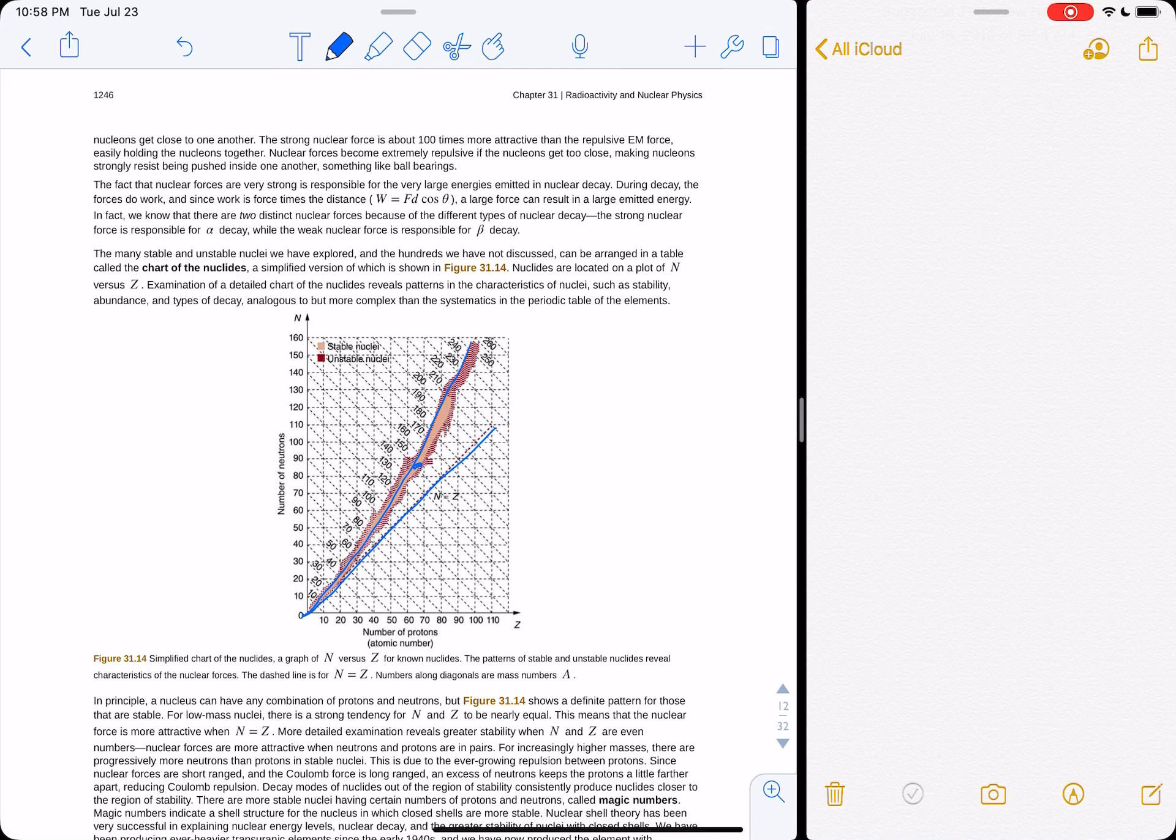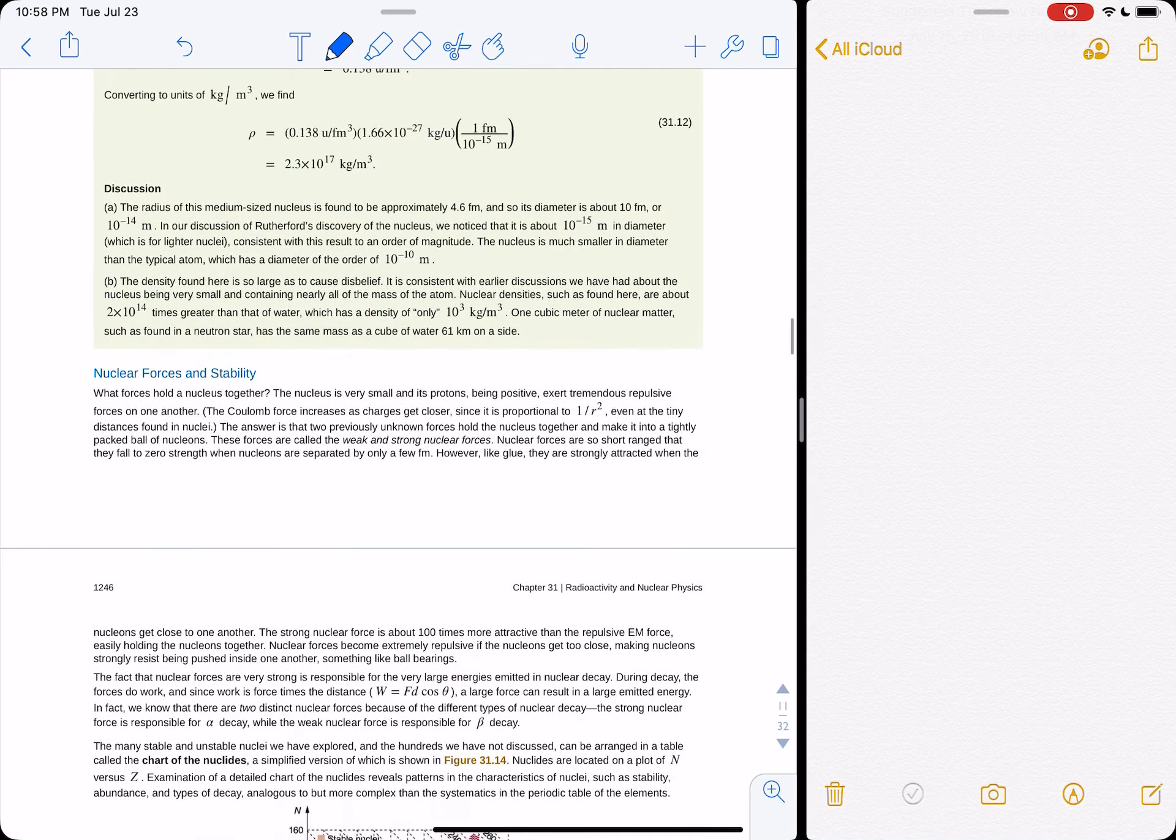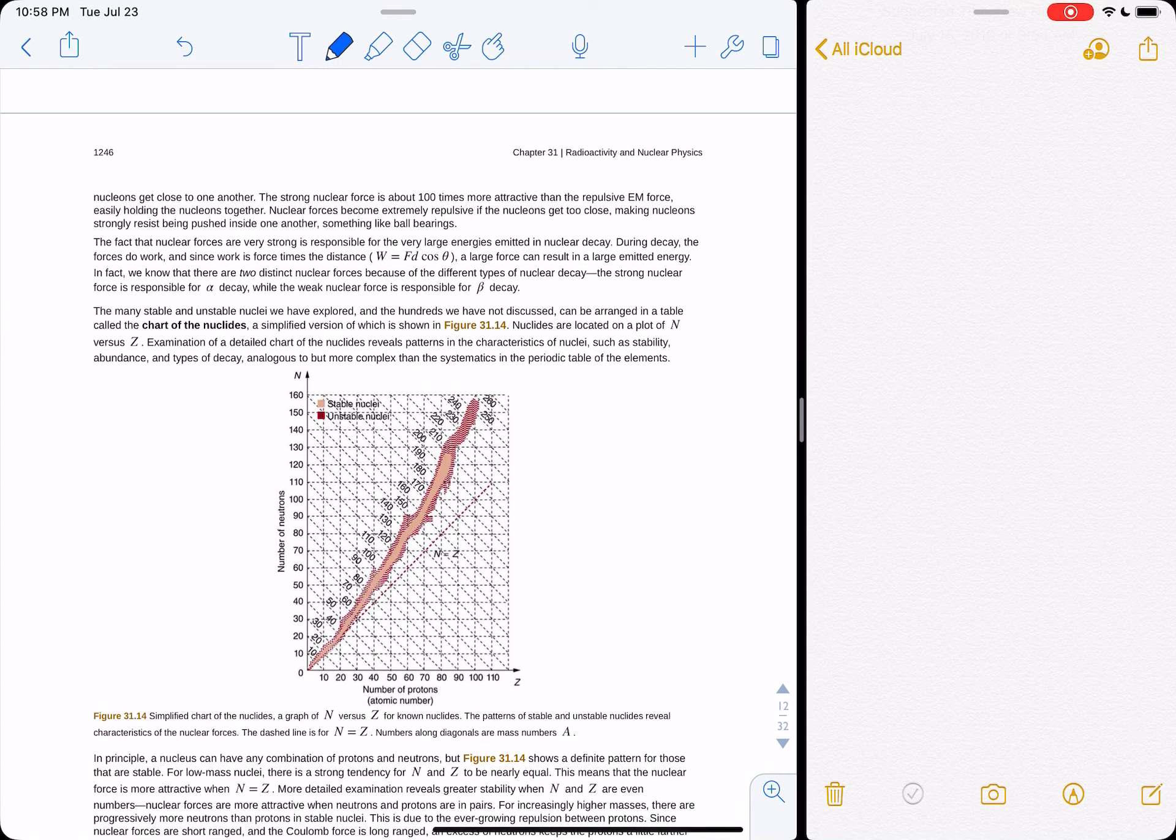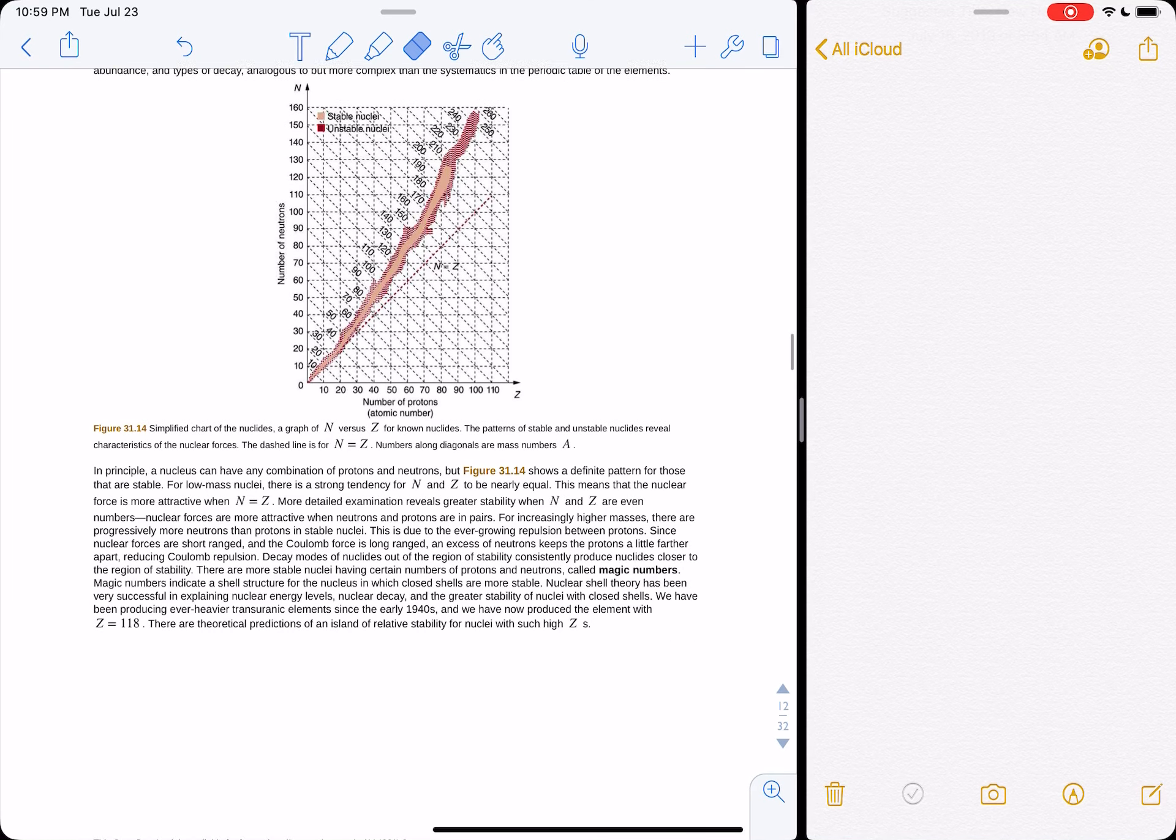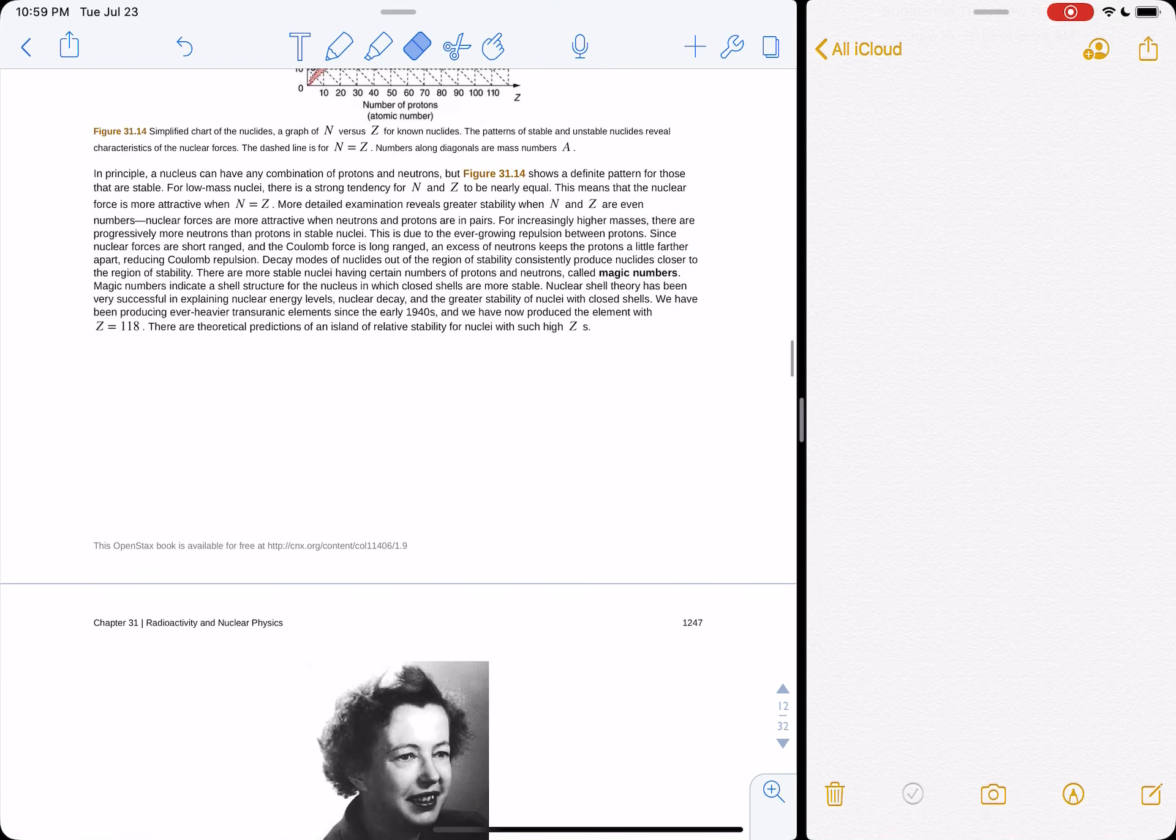And then uranium-238 is at 92, or, yeah, 90, what is uranium? 92, right? Yeah, 92. Uranium-238, so uranium-238 is up here, 238 nucleons. So up there would be 100 and whatever number of neutrons, but only 92 numbers of protons. So this chart here is showing you what's stable, what we find in the universe is being stable.